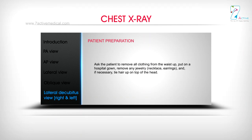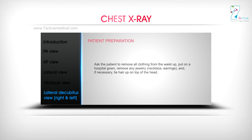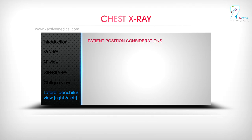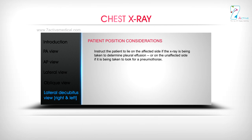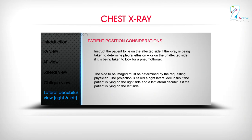Patient preparation: ask the patient to remove all clothing from the waist up and put on a hospital gown. Remove any jewellery, necklaces, earrings, and if necessary, tie hair up on top of the head. Patient position considerations: instruct the patient to lie on the affected side if the X-ray is being taken to determine pleural effusion, or on the unaffected side if it is being taken to look for a pneumothorax. The site to be imaged must be determined by the requesting physician.